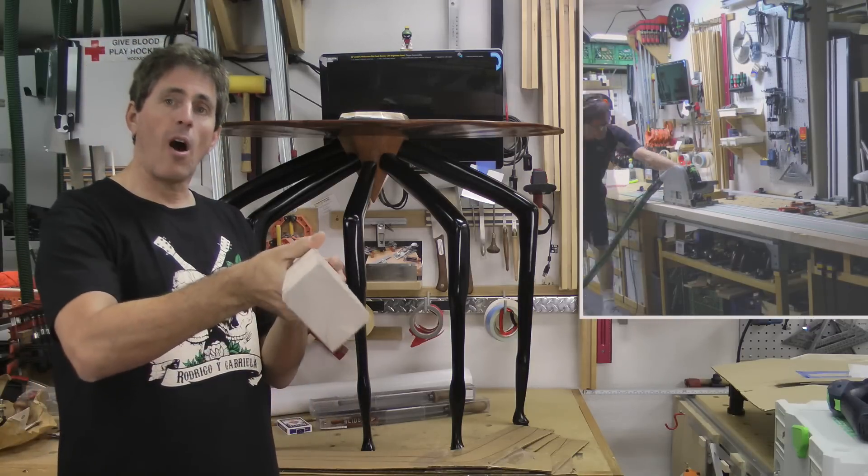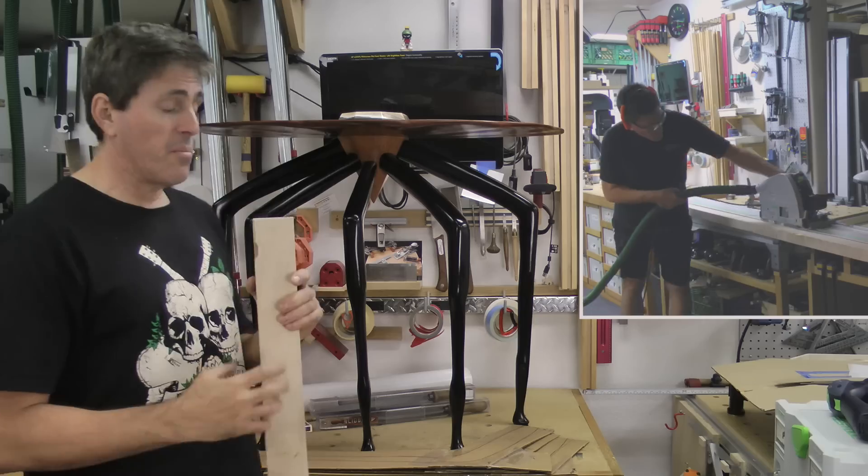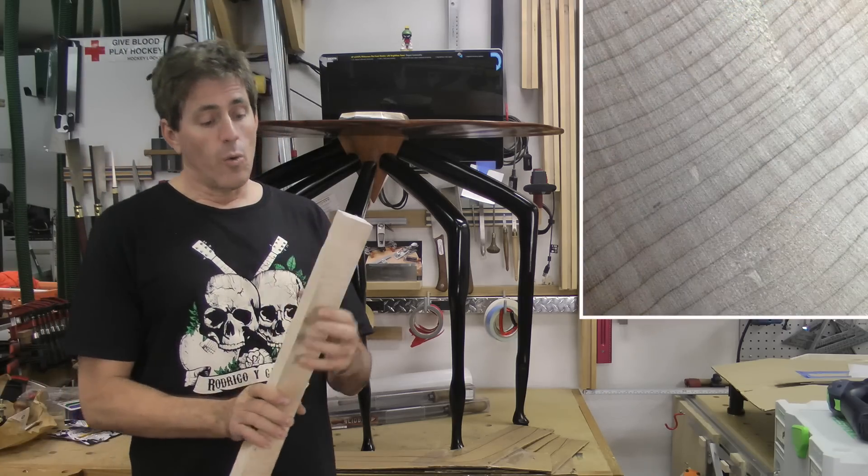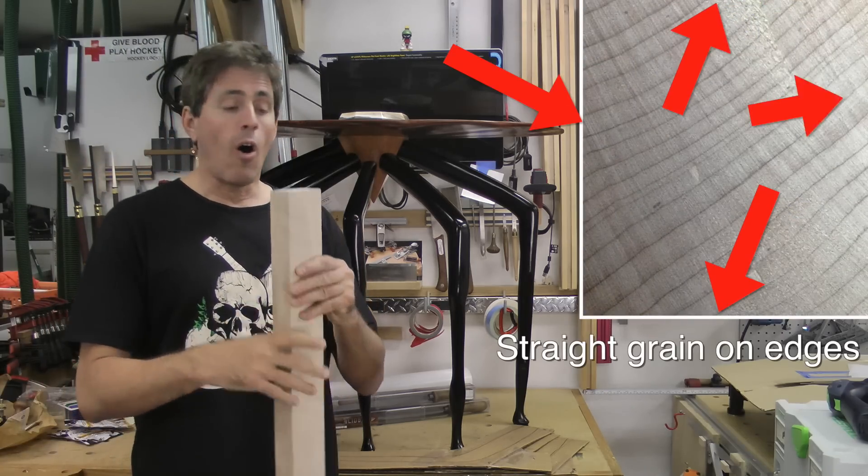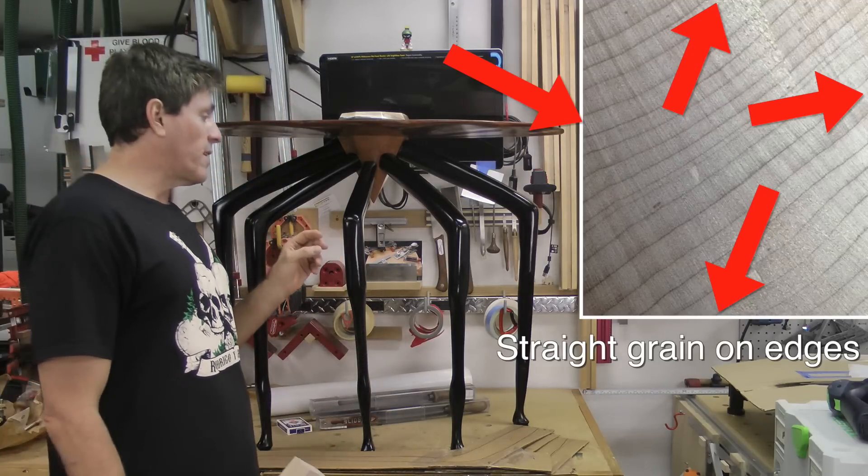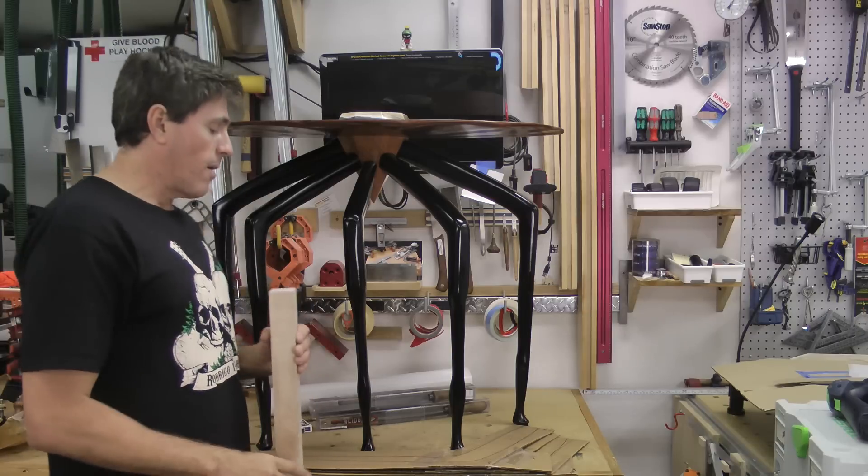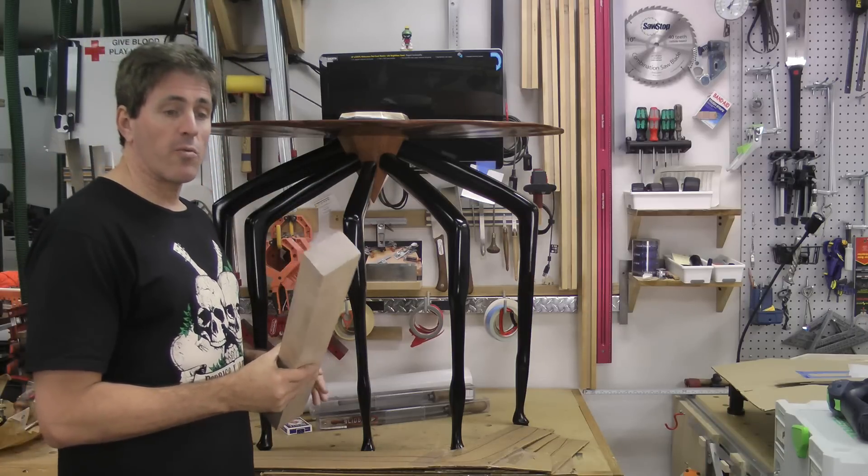Now the reason you want it to be riftsawn is simply that way you're always going to be presented with straight grain lines on all four sides. Now in this case here we are shaping it and all that, but we're still going to end up having predominantly straight grain as opposed to having cathedral grain going everywhere. And also it's more stable this way.